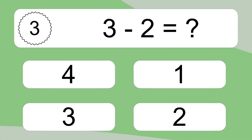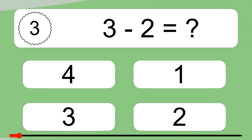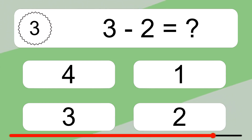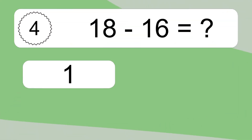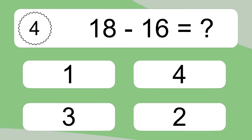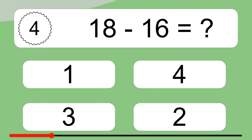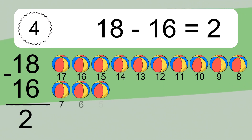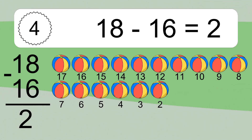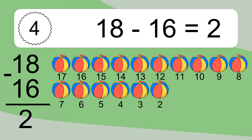13 minus 2 equals what? 13 minus 2 equals 11. 18 minus 16 equals what? 18 minus 16 equals 2. Let's count it: 17, 16, 15, 14, 13, 12, 11, 10, 9, 8, 7, 6.